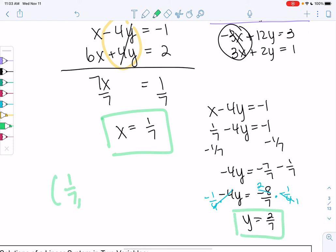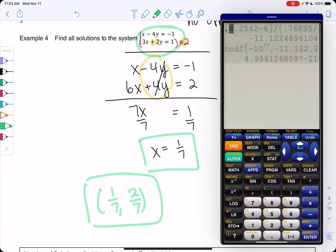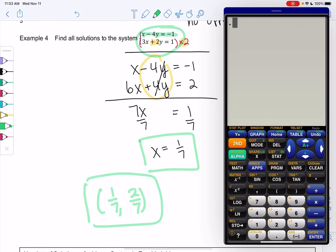So our solution is 1/7 and 2/7. And we're probably panicking because there's fractions. So let's just check our answer really quickly. So x is 1/7 minus 4 times 2/7. And we get negative 1. Perfect. And then second equation, 3 times 1/7 plus 2 times 2/7. Hopefully we get 1. And we get 1. So we can check our work to feel more confident.